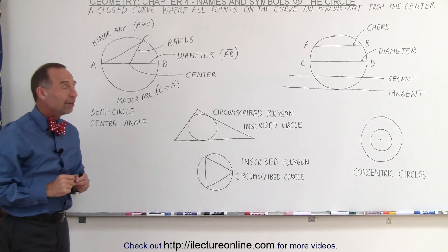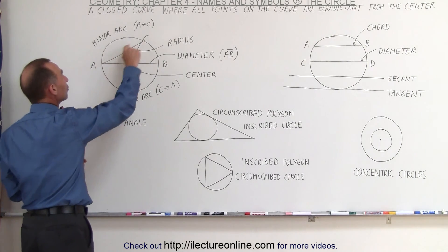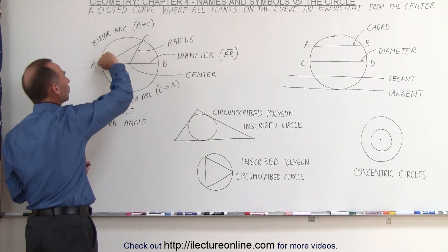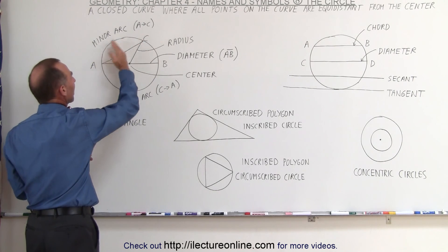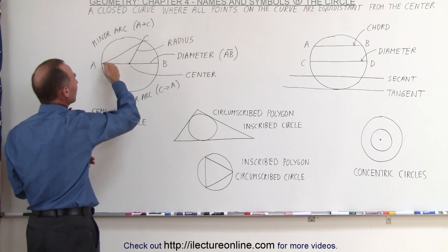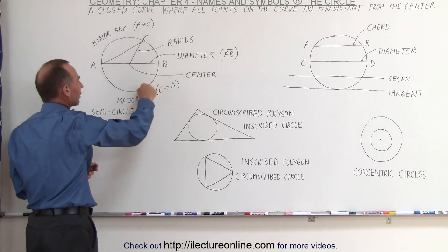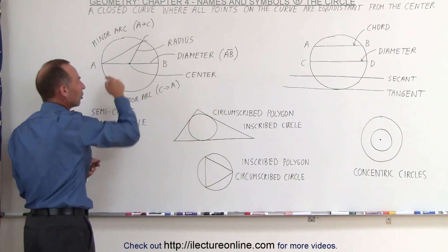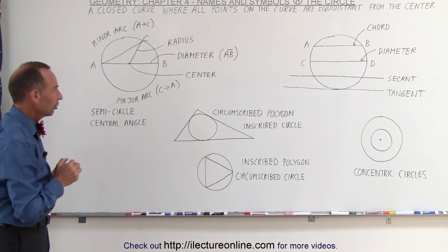And if we draw a line from A to C, then this portion of the circle is called the minor arc because it spans an angle of less than 180 degrees, and then this other portion right here is called the major arc. So those are the main portions of a circle.